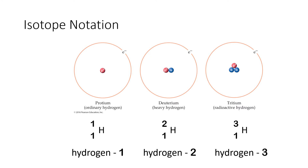Now let's look at the drawings and the symbols. The symbol on the left has a 1 for the top number, the middle one has a 2, and the right-hand one has a 3. Looking at the nuclei, what we have 1, 2, and 3 of respectively is the total number of particles in the nucleus. So that top number is telling us the total of the number of protons plus the number of neutrons. The top number is known as the mass number.